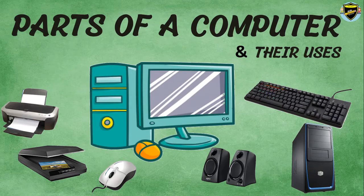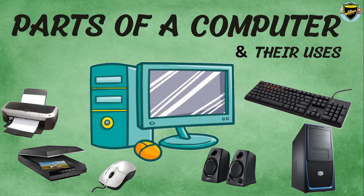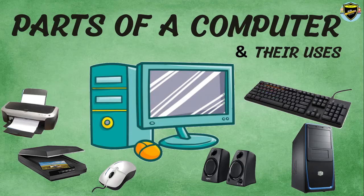Parts of a computer and their uses. In this video we will learn about the different parts of a computer and their uses. A computer is an electronic device that processes data according to a set of instructions. Computer plays a major role in our day-to-day life, whether it's at home, school, office, or so on. We are so much dependent on computers. In this video we will basically focus on the two major parts: input device and output device.